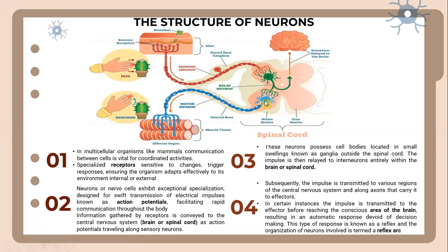Subsequently, the impulse is transmitted to various regions of the central nervous system and along neurons that carry it to the effector. In certain instances, the impulse is transmitted to the effector before reaching the conscious area of the brain, resulting in an automatic response devoid of decision-making. This type of response is known as a reflex, and the organization of neurons involved is termed a reflex arc. As a result, you will automatically take your hand away from the sharp object.